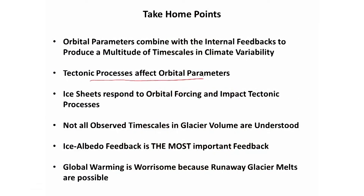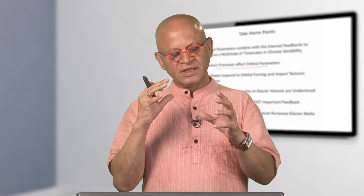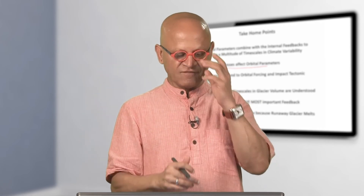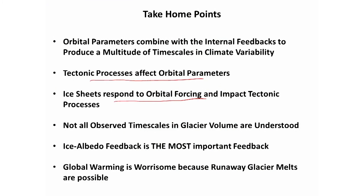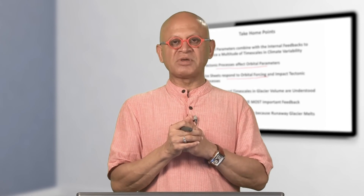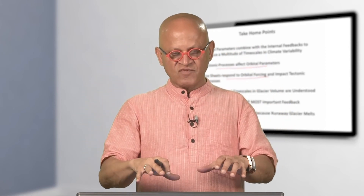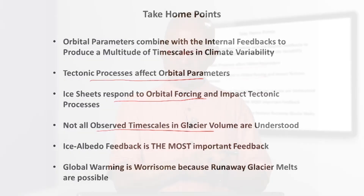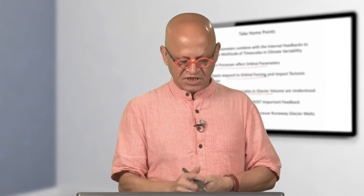Tectonic processes affect orbital parameters — as continents move, the Earth-Moon system changes its orbital periods, length of day, and gravitational pull, affecting precession and obliquity cycles over the evolution of the Earth. Ice sheets respond to both orbital forcing and tectonic processes, as is clear in all the geochemical evidence. As glaciers build, plates get depressed; as glaciers melt, plates rebound. Many time scales are observed in geochemical records of past glacier volumes, not all fully explained — there is a lot of science still to be done.